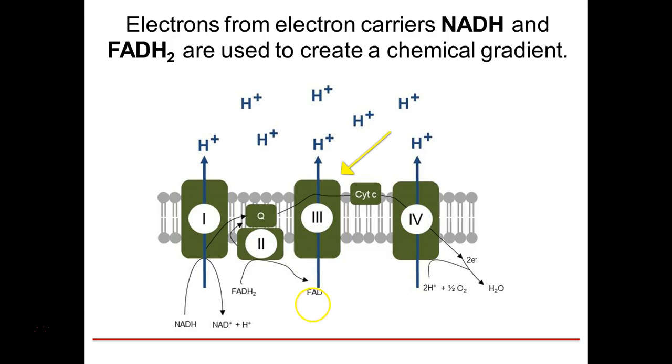Complex 3 pumps protons through the membrane. It passes its electrons to cytochrome C for transport to the fourth complex of proteins and enzymes. Complex 4 then reduces oxygen. It picks up two hydrogens from the surrounding medium to make water. In the process of doing that, they're going to be pumping through protons to the other side of the membrane.